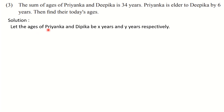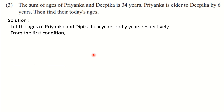Or you can write: let the present age of Priyanka be X years and that of Deepika be Y years. Now we have to make use of the conditions. From the first condition — the sum of the ages of Priyanka and Deepika is 34 years — sum means addition, and their ages are X and Y. So the first equation is X + Y = 34. This was a very easy condition, so we can easily write down the equation in standard form. Number it as equation 1.